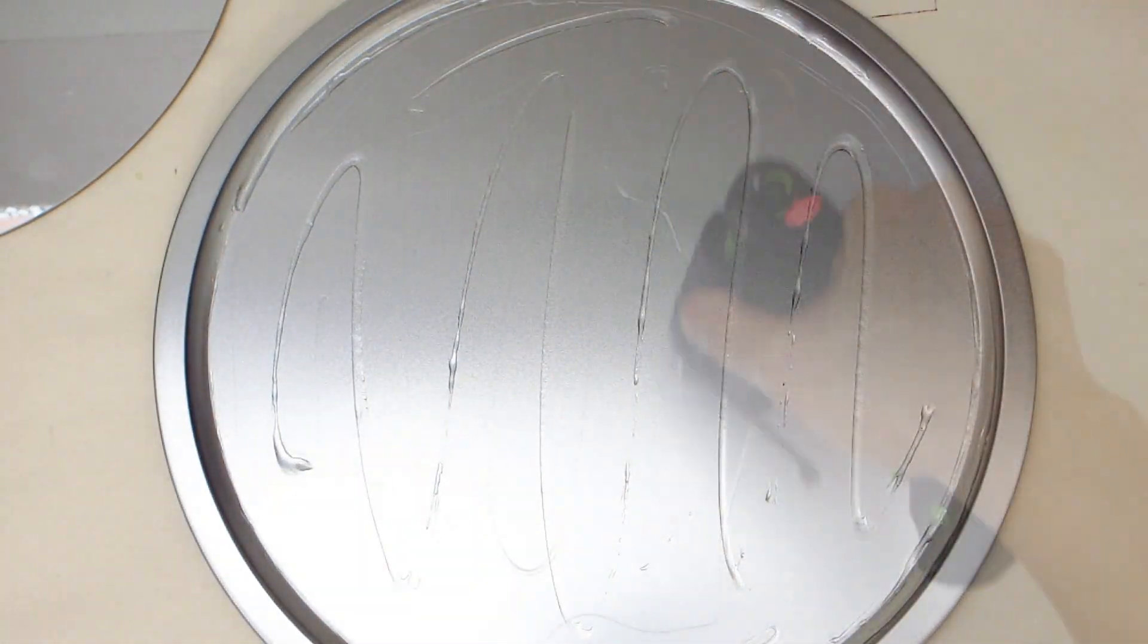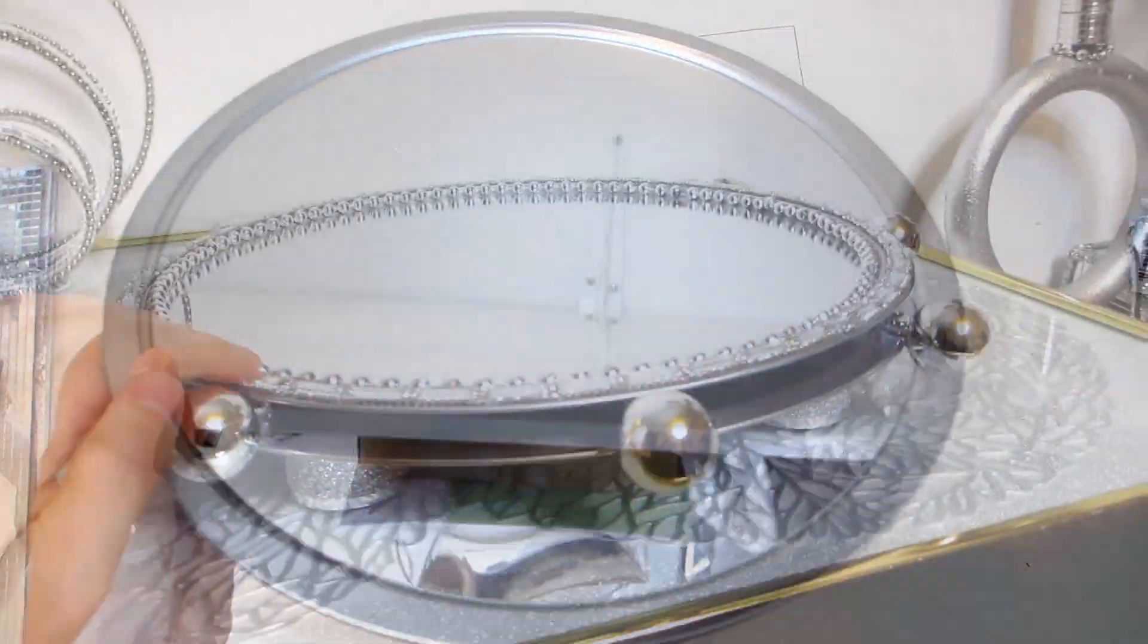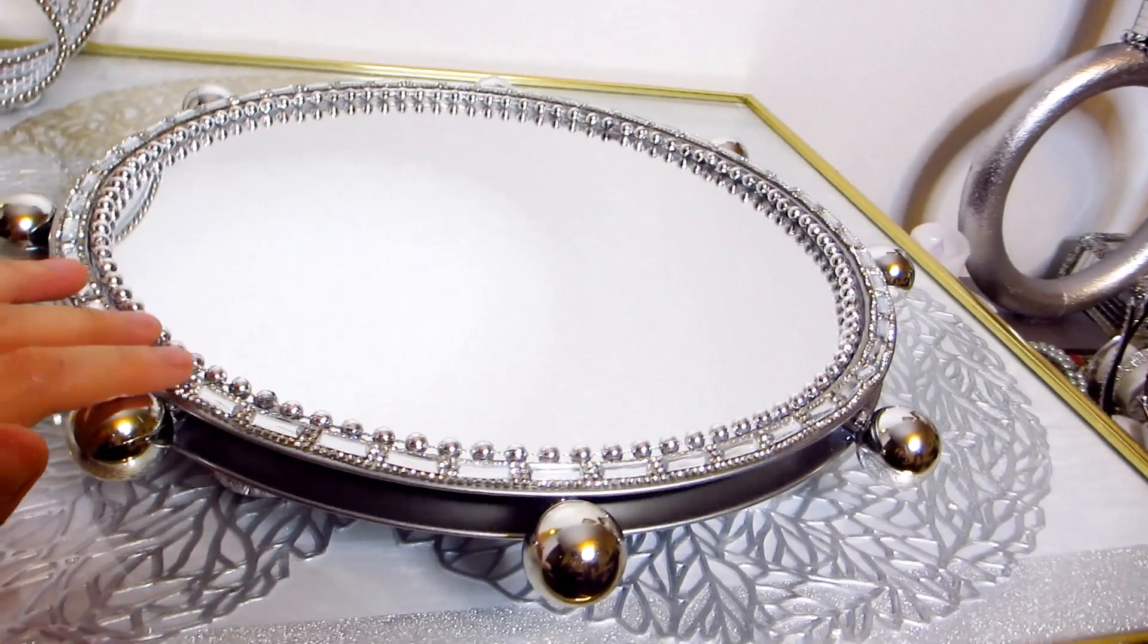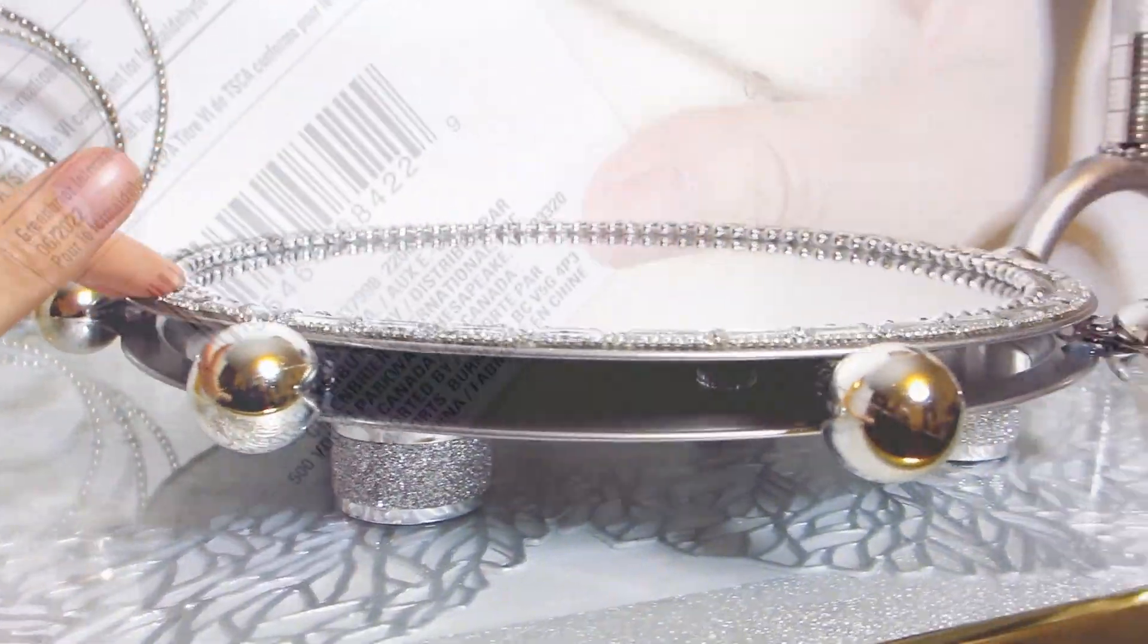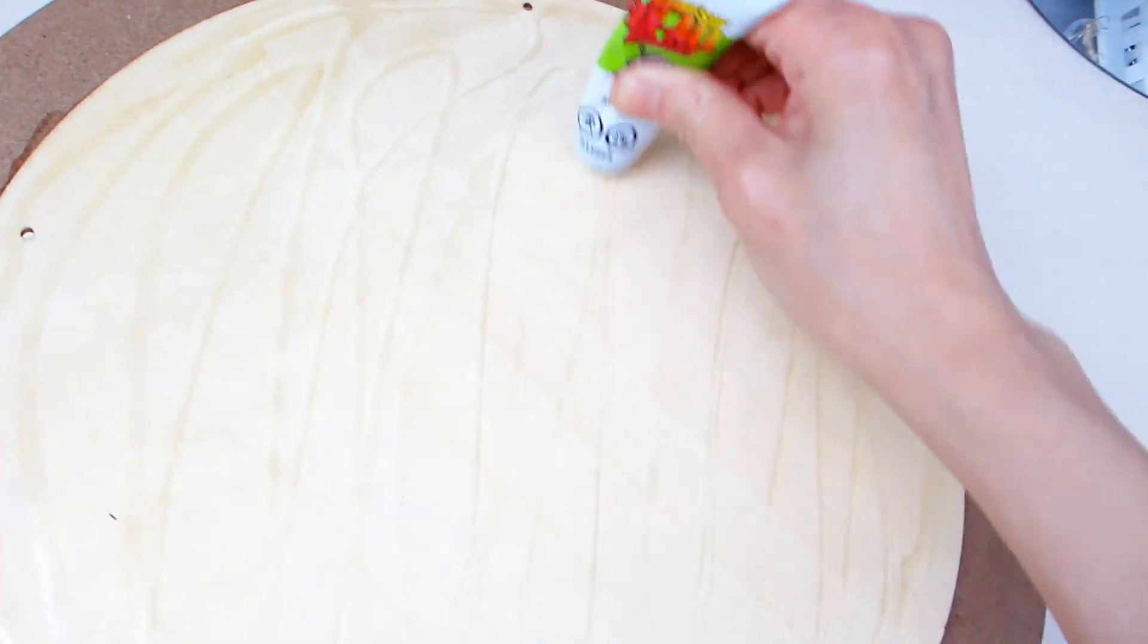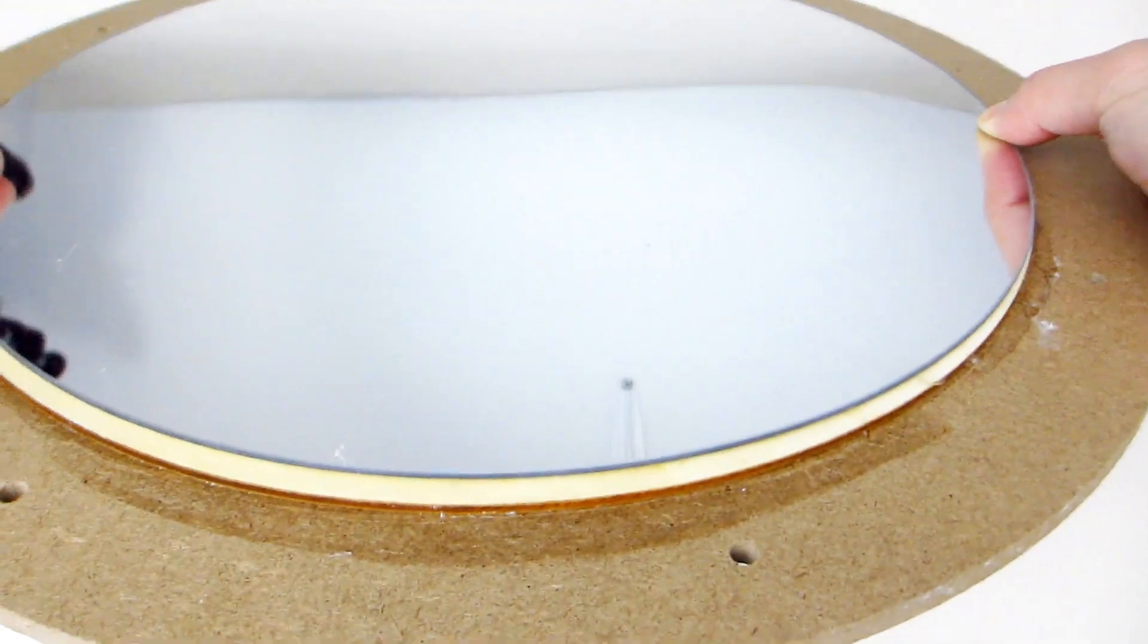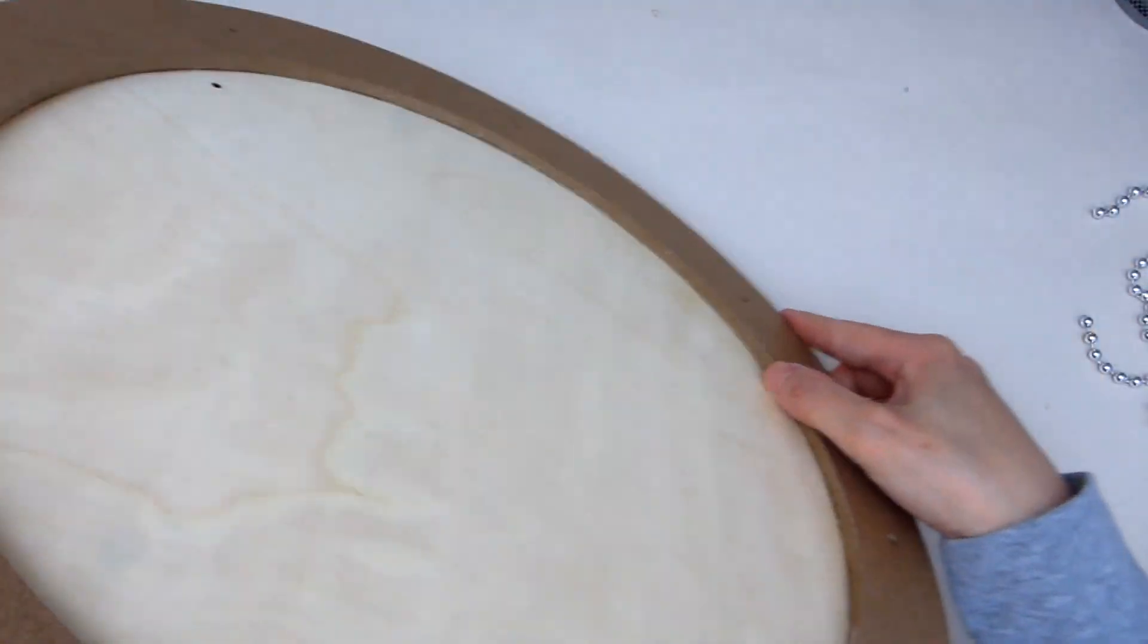And here I'm applying Fix-All to a pizza pan before setting a mirror into it to make a Lazy Susan rotating tray. And here I'm applying Fix-All to another wood panel to make a tabletop for a side table. The tabletop will be removable as it will also act as a serving tray, so I need to ensure that the mirrored surface is secured.